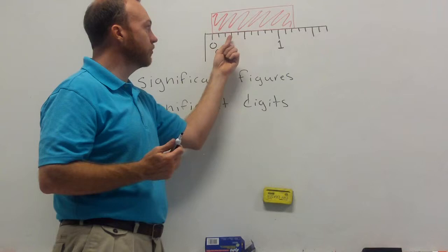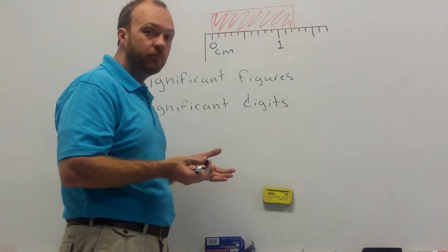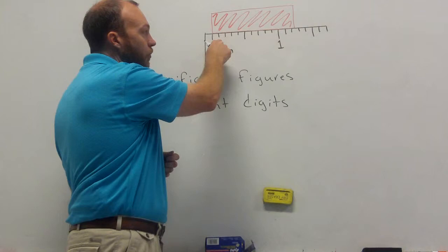So, the little numbers in between, since there are ten, one, two, three, four, five, six, seven, eight, nine, ten, are either a tenth of a centimeter, or you should know a tenth of a centimeter is a millimeter.